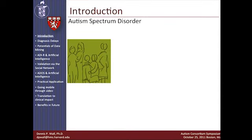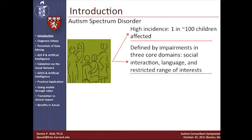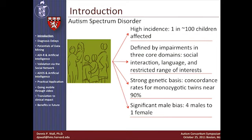To get started, I just wanted to remind people that autism has a high incidence rate defined by impairments in three core domains: social interaction, language, and restricted range of interest. It has a strong genetic bias, a strong male bias, and right now it's primarily diagnosed through behavior. It's in this last point that I want to be focusing on for really the entirety of my talk.